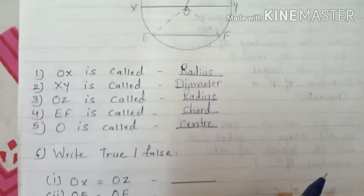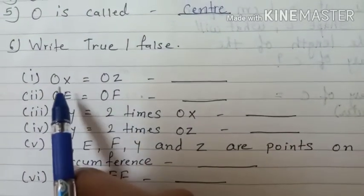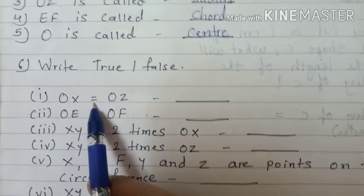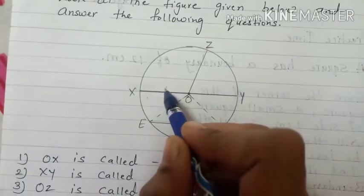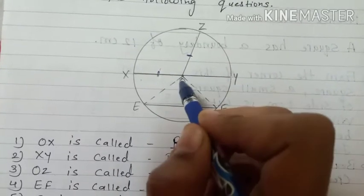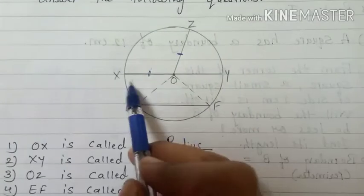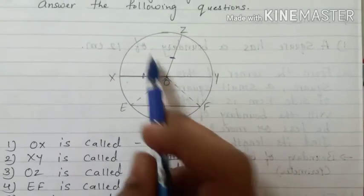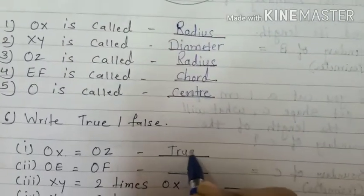Now true or false. From this figure, we have to write true or false for each condition. First condition: OX is equal to OZ. Let's see in the figure - this is OX and this is OZ. OX and OZ are both radii. Radius distance is equal because it is from the center to the circle - equal distance. So OX equals OZ - that is TRUE.